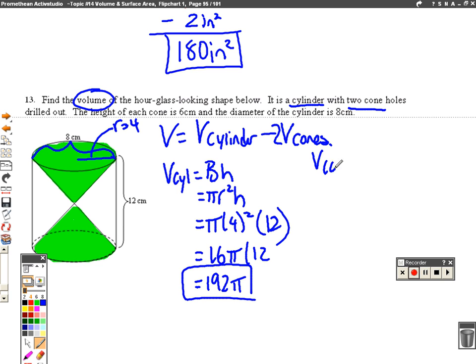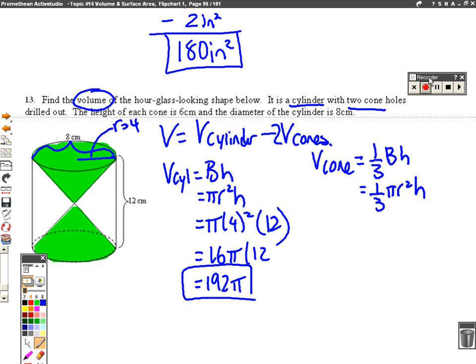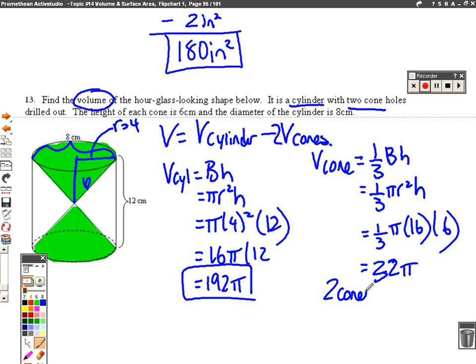Okay. Well, how about the volume of the cone? The volume of the cone, as we said before, was 1 third big B times H. And big B is a circle, so pi R squared times H. And if we go ahead and plug in what we have, R is 4. And so 4 squared is 16. And the height of just one of these cones is going to be 6. So I'm going to multiply it by 6. So we've got 1 third times 6, which is 2. And 2 times 16 is 32. So this is 32 pi is one cone. So that means 2 cones will be 64 pi.